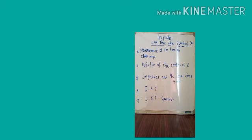You have also got information about standard time: the local time at the longitude passing through the middle of a country is generally considered as the standard time of that country. Indian Standard Time has been decided with reference to the 82 degrees 30 minutes east longitude. And the last important point is the Universal Standard System.